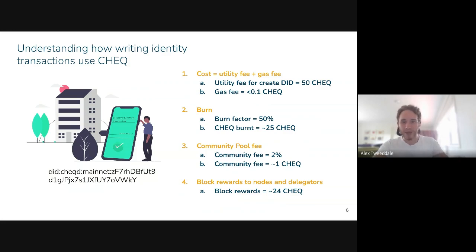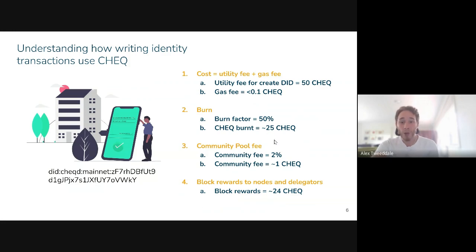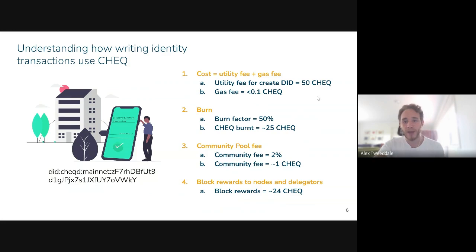Something we've recently introduced in our latest update is a burn mechanism. Every identity transaction written to the network has a percentage of that transaction which will be burnt. Initially, we're going to set the burn factor to 50%. So if you're creating a DID and paying 50 Check, around 25 Check is going to be burnt. On top of that, we've also got a community pool fee — a percentage of the 50 Check gets sent to the community pool, which is an aggregated pool of value used to pay for developments on the Check network, and the community can vote on what it gets used for. About 1 Check goes to the community pool, and the remaining 24 Check gets distributed as block rewards to the nodes, validators, and also to people who are staking — the delegators.